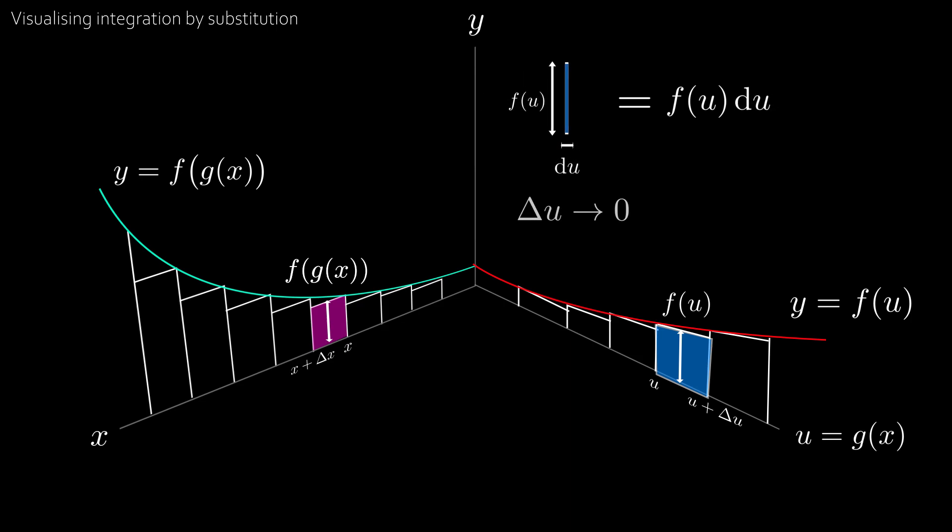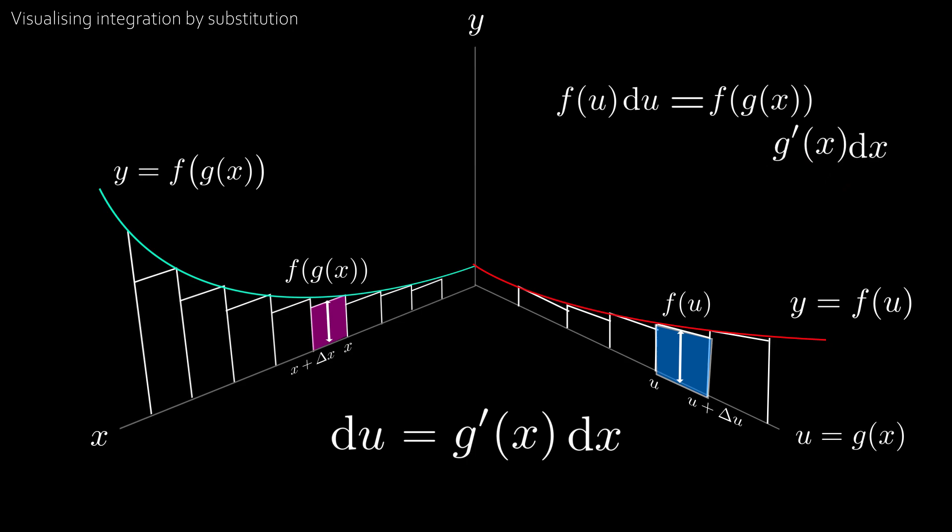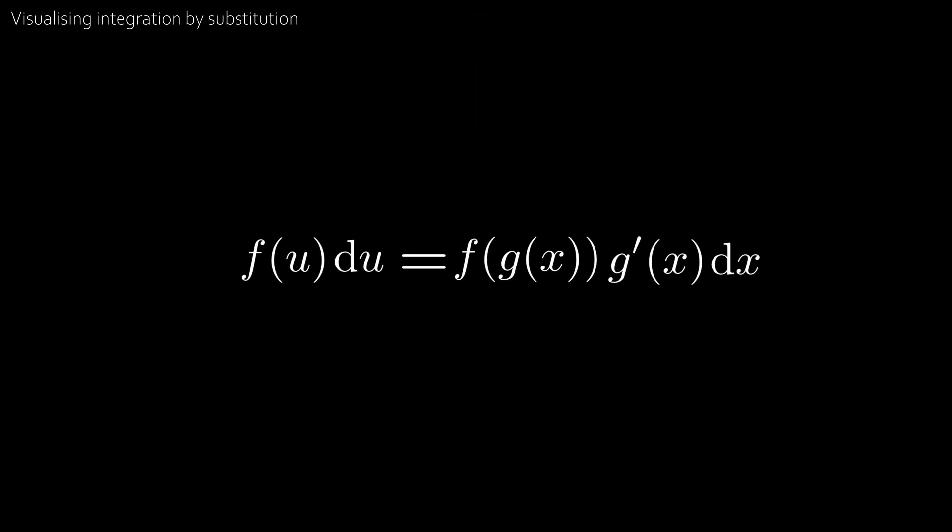What we also know is that du by dx is equal to the derivative of g, since u is g of x. Then multiplying by dx across gives du equal to g dash x dx, which means f of u du is equal to f of g of x, as both rectangles are the same height, times g dash dx.